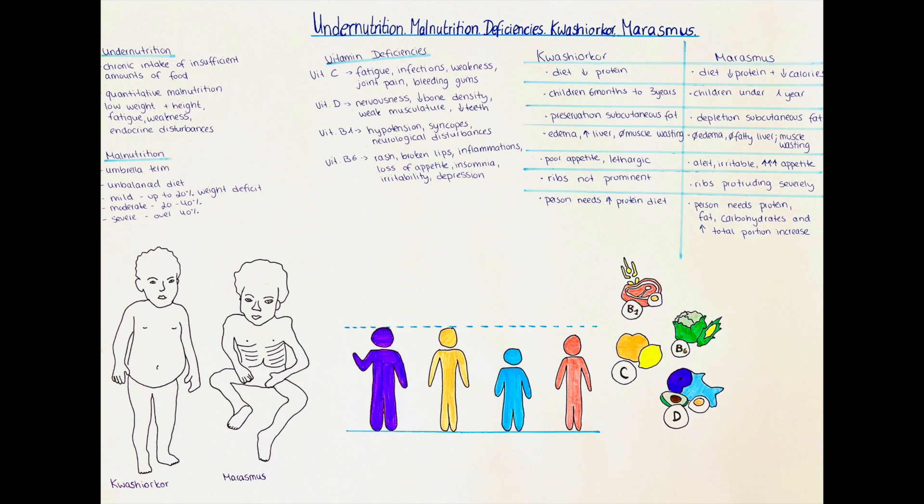Undernutrition is a form of malnutrition which is characterized by the chronic intake of insufficient amounts of food and the essential components it contains. This is a type of quantitative malnutrition as the food quality might be good but the amount consumed is too little.